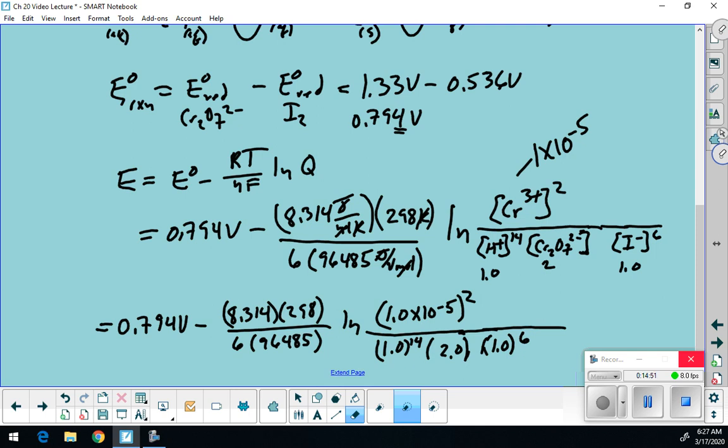And I get negative 23.7 times 298 divided by... nope, not divided. Times 8.314 divided by 6 divided by 96485. Take the negative of that, right? Because I have to subtract. So I have to take 0.794 minus my answer.